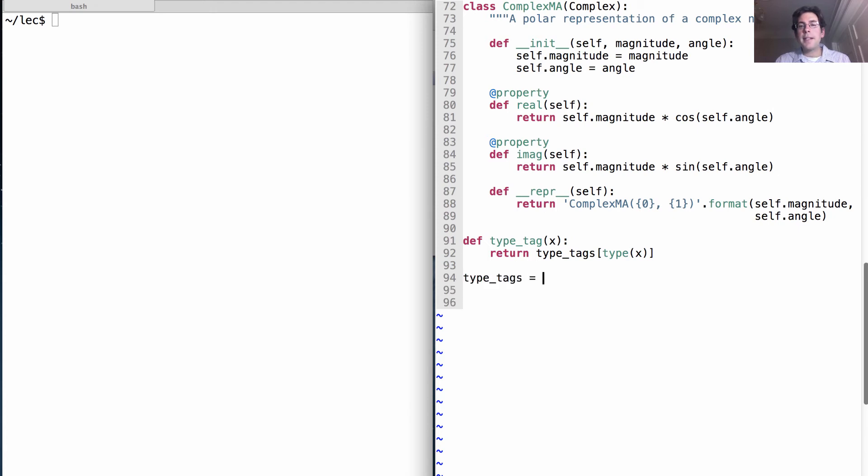Where type_tags is a dictionary that contains ComplexRI, which is com, ComplexMA, which is another type of complex number, or finally, Rational,